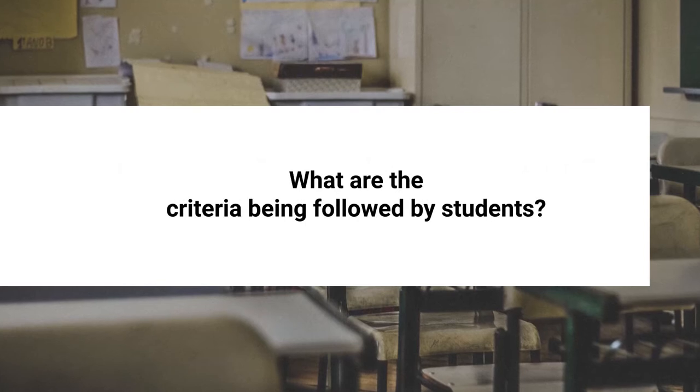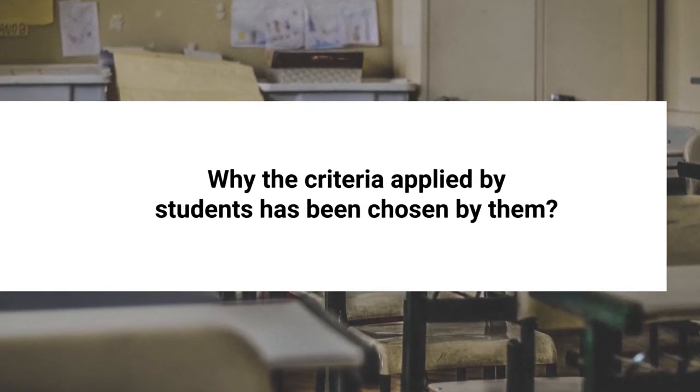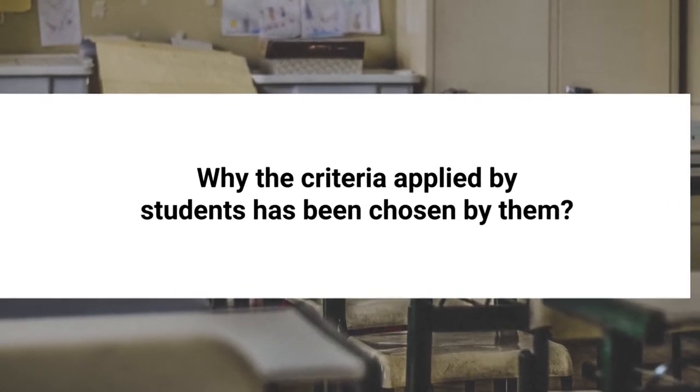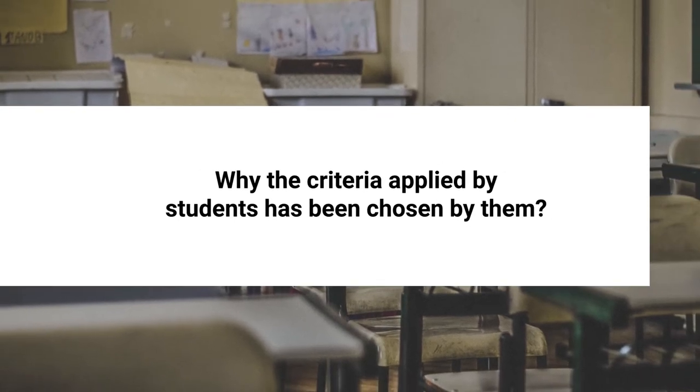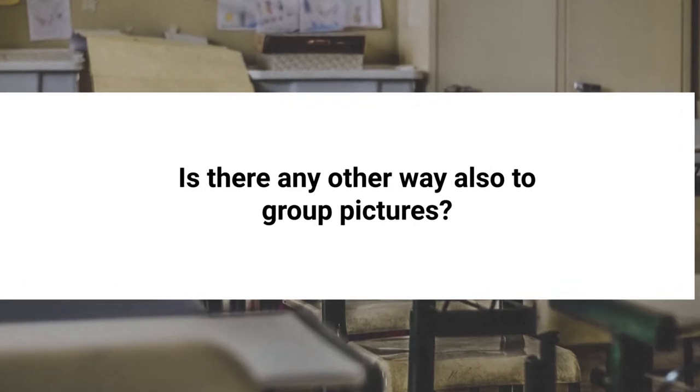Let the criteria be chosen by the students, and let the grouping of the pictures be done by the students themselves. Then ask what criteria they followed while distributing the plants or animals into different groups. If they have chosen criteria like the size of the leaf, the hardness of the stem, four legs, or swimming animals — students can apply many criteria. Then ask why they chose that particular criteria, and whether there is any other way to group the pictures.